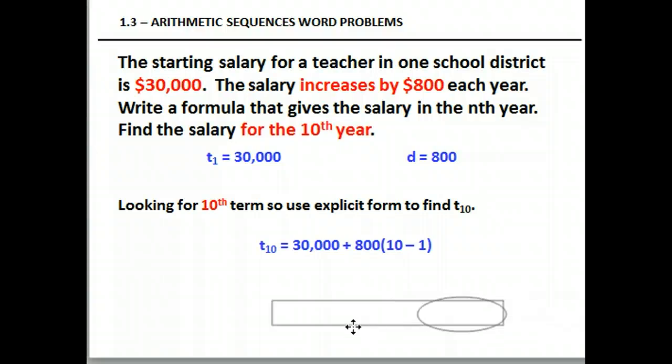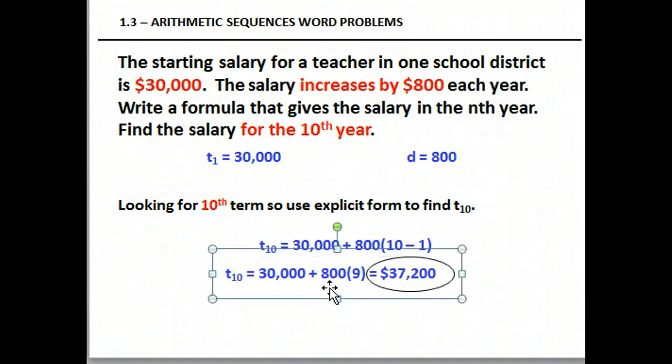You should have gotten, for the 10th year, $37,200. I hope this helps. I'm going to go on to do geometric word problems next. Thank you.